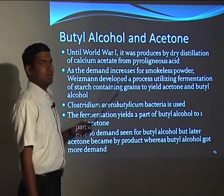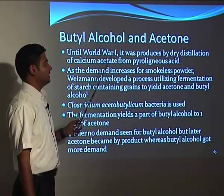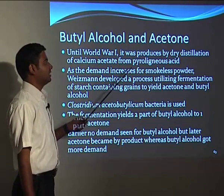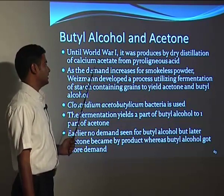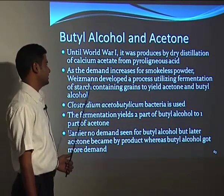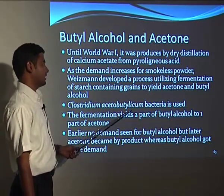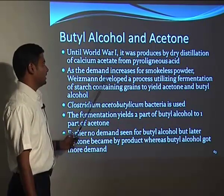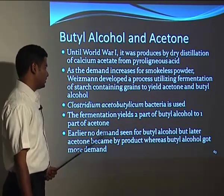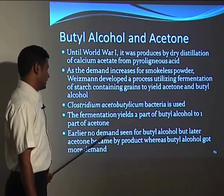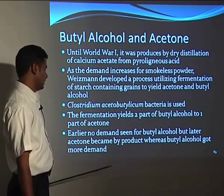Turning to butyl alcohol and acetone manufacturing: until World War I, acetone was produced by dry distillation of calcium acetate from pyrogenous acid. As demand increased for smokeless powder, a process was developed utilizing fermentation of starch-containing grains using Clostridium acetobutylicum bacteria to yield acetone and butyl alcohol. The fermentation yields two parts of butyl alcohol to one part of acetone. Earlier, there was no demand for butyl alcohol, but acetone became the byproduct later as butyl alcohol gained more demand.